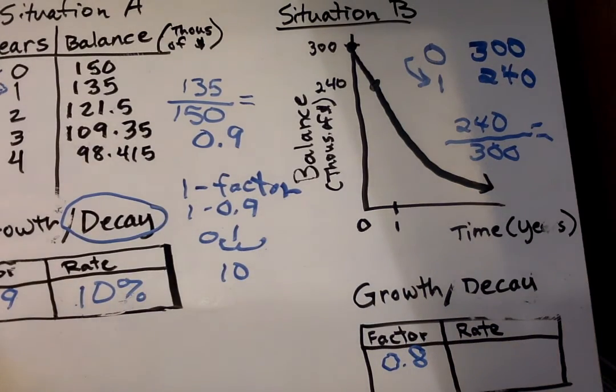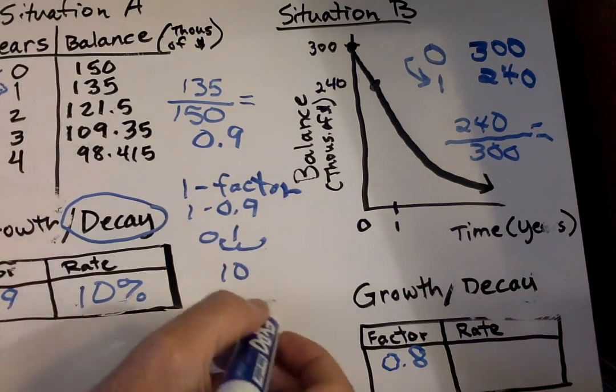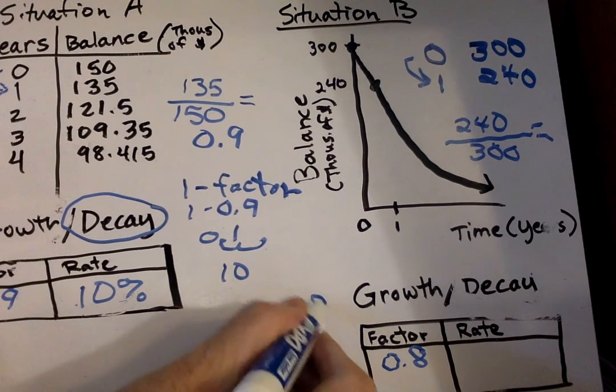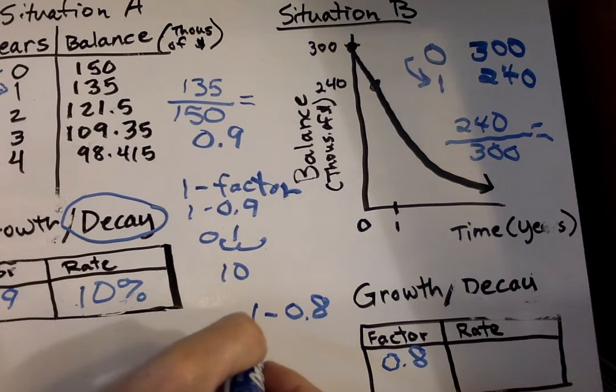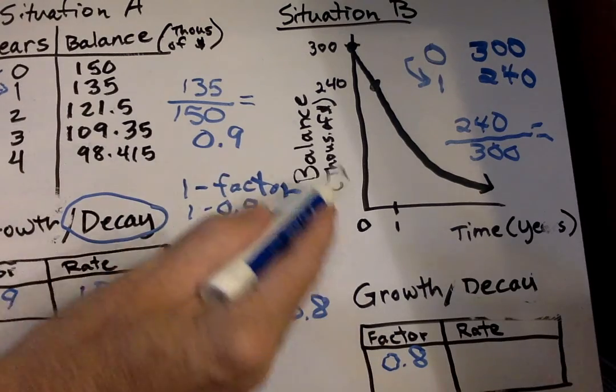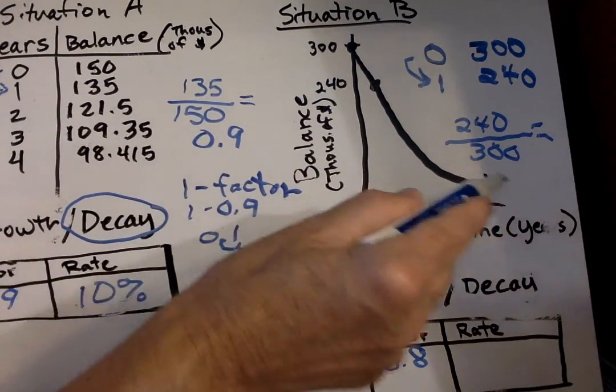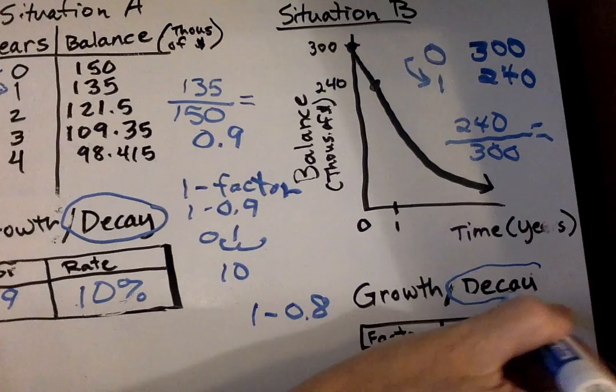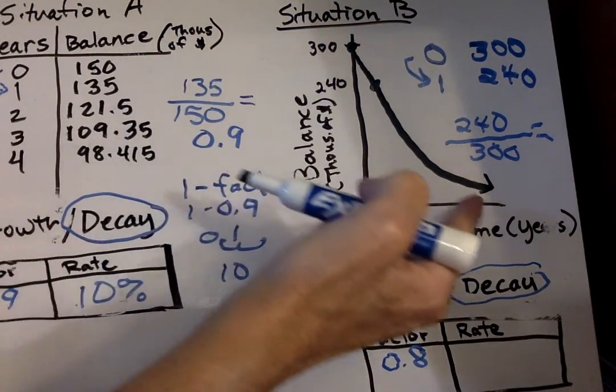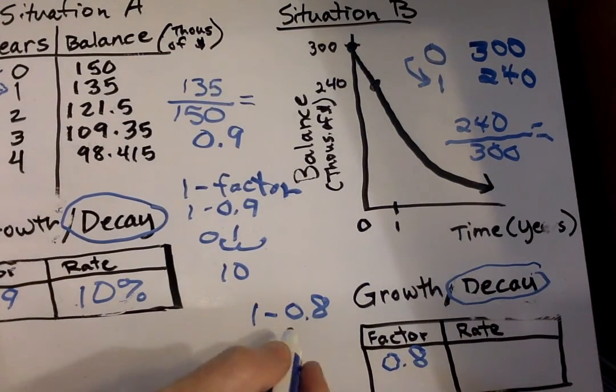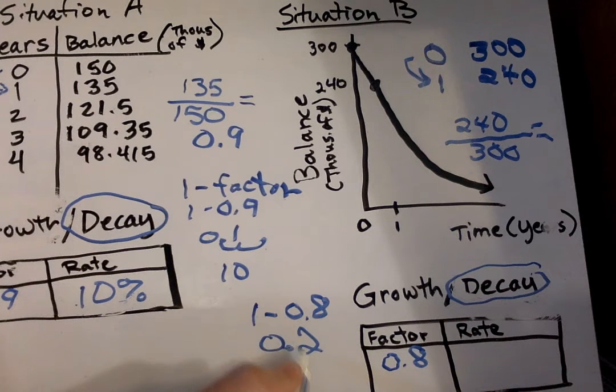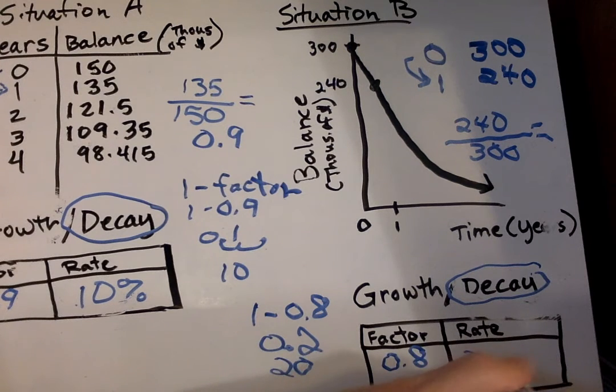Now to get our rate, we do 1 minus the factor. And we need to make sure, is it growth or decay? It has to be decay because over time it's going down. So 1 minus 0.8 equals 0.2. And then we have to take that, move it over two decimal places to get our rate. So our rate is going to be 20%.